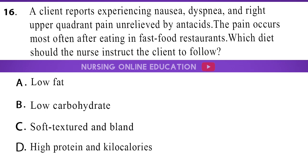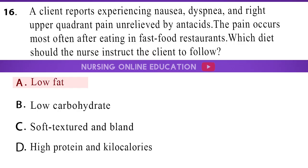Question 16: A client reports experiencing nausea, dyspnea, and right upper quadrant pain unrelieved by antacids. The pain occurs most often after eating in fast food restaurants. Which diet should the nurse instruct the client to follow? A. Low fat. B. Low carbohydrate. C. Soft textured and bland. D. High protein and kilocalories. The answer is option A: Low fat.